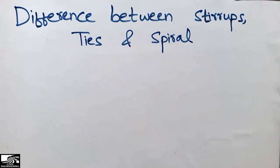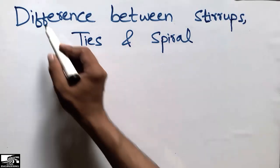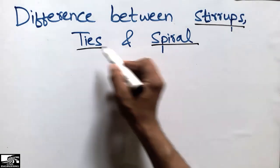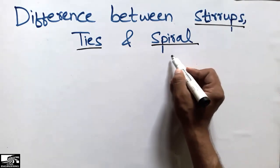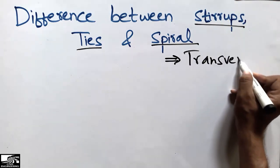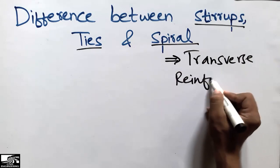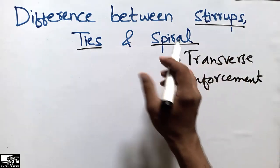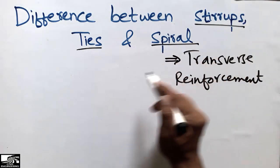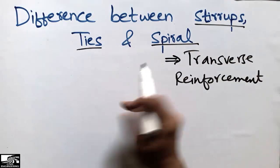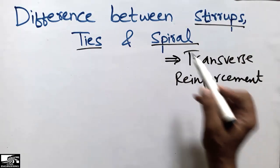Hello guys, welcome back to the Seven Engineering YouTube channel. Please subscribe to our channel for daily videos. Today our lecture is about the difference between stirrups, ties, and spirals. These three types of reinforcement are called transverse reinforcement, and they are used in different structural members, which is why they hold different names.